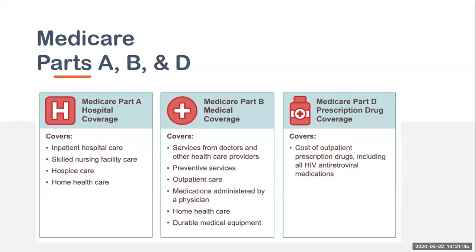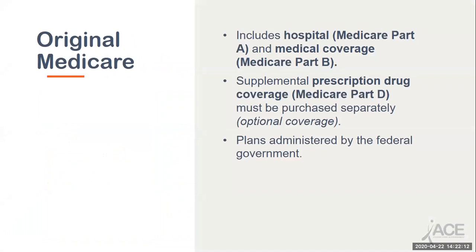Even though there are four different parts to Medicare, clients will only enroll in one of two ways. The first main Medicare enrollment option is through Original Medicare, which includes Part A (hospital coverage) and Part B (medical coverage) — sometimes called traditional Medicare. Original Medicare does not include prescription drug coverage; people must purchase a supplemental Part D prescription drug plan. Original Medicare plans are administered by the federal government. Clients can also enroll through a Medicare Advantage plan, also known as Medicare Part C, which bundles Part A, Part B, and Part D coverage. Unlike Original Medicare, Medicare Advantage plans are administered by private insurance companies contracting with the federal government.